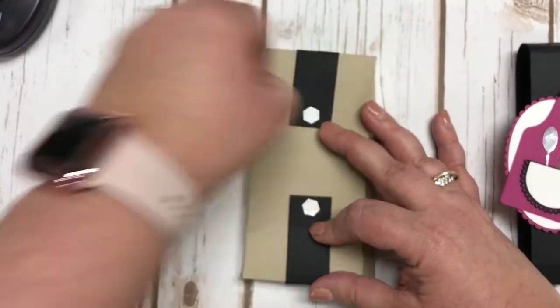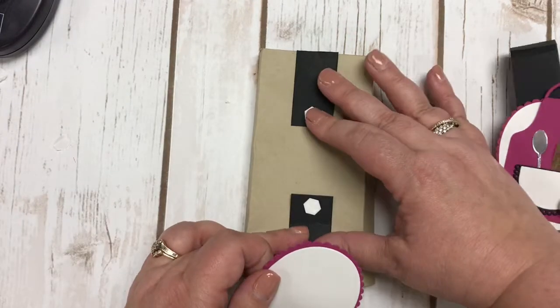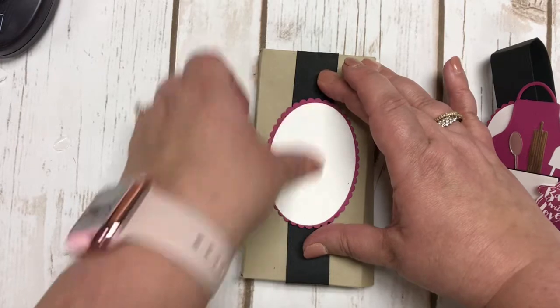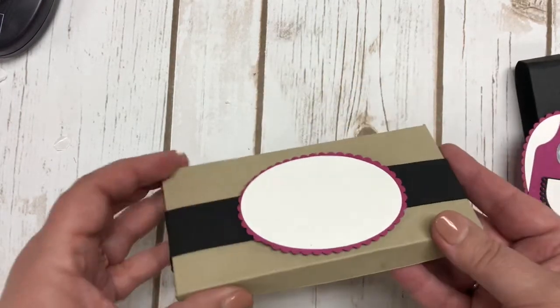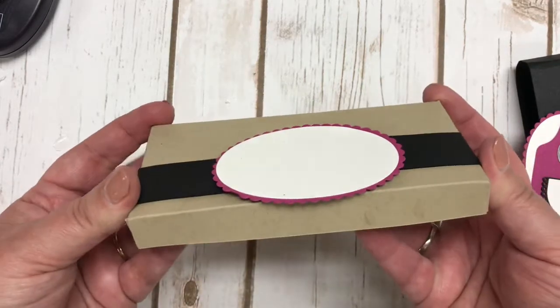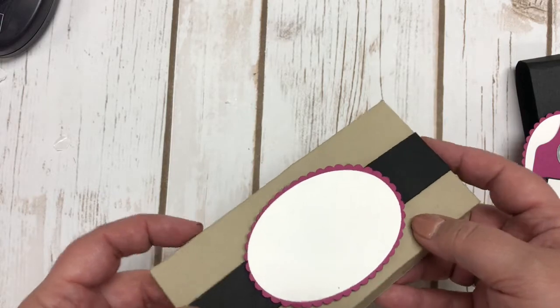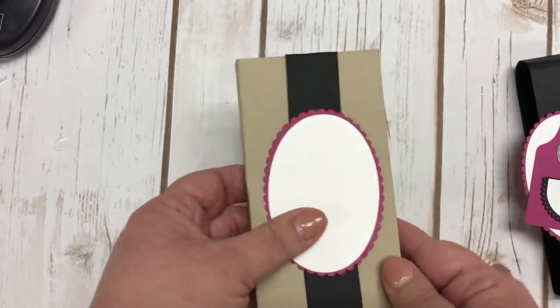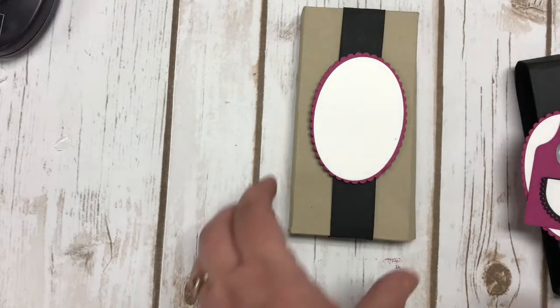Then what I did is I took off the top part of these dimensionals and I simply added my two ovals from the layering ovals like that. Then that will allow you to slide that on and off without having to rip it or without having to really do anything to take it off too hard. That kind of holds it together really nice and what I want to show you then is how cute this little apron went together.